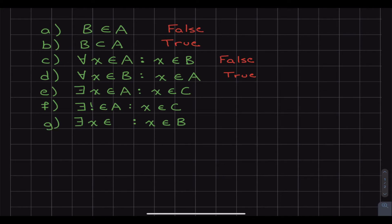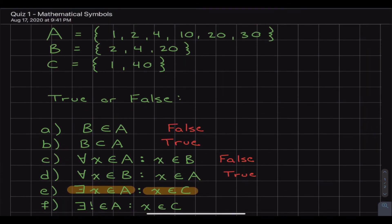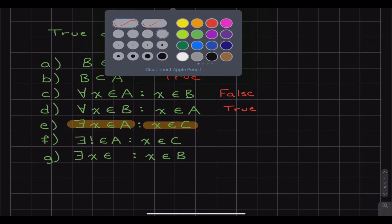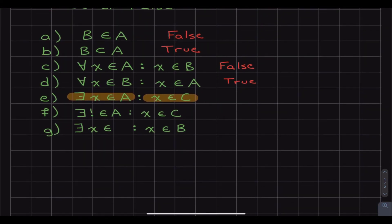So instead of for every, we only have to find one that exists. So basically what this is asking is there exists an element or there exists a number in A that also exists in C. So if we go up here and we look at A, we see that A has a 1 and C has a 1. So yes, there does exist an element in A that also exists in C. So this value right here, or I guess the statement, statement E, this is going to be true.